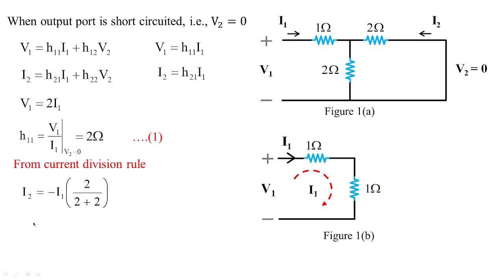Current division rule states: i2 = i1 multiplied by the opposite resistance (2 ohms) divided by the sum of the parallel resistances (2 + 2). The sign is negative because i2 flows opposite to i1. Hence h21 = i2/i1 at v2 = 0 = −1/2. Since it is i2/i1, it is dimensionless — it is the forward current gain.